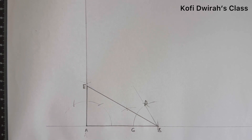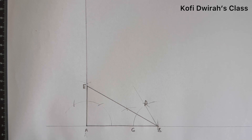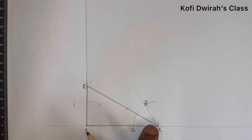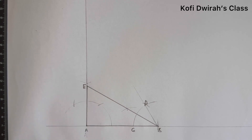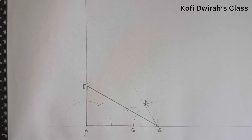That is how to construct a right angle triangle giving the theta or the angle and the adjacent. Thank you very much for coming to this class. Please, if you are new to this channel, subscribe and be part of this class. For my subscribers, thank you very much for always coming along. If you don't know how to construct a 90 degree angle, or 60 or 30 degree angle, check on my channel — I have a lesson you can learn from. Thank you very much, I will see you in my next class. This is Kofij's class — see you, bye.